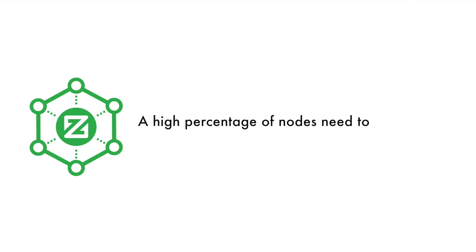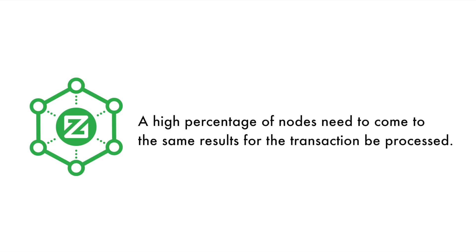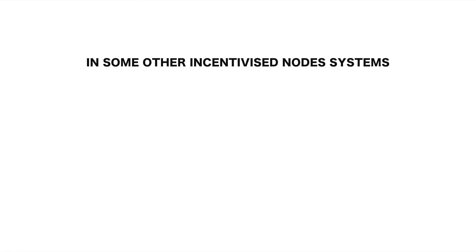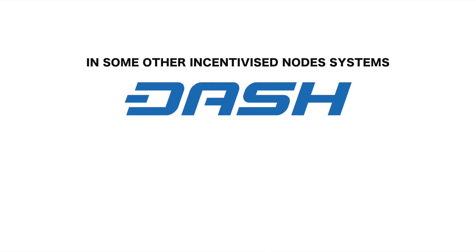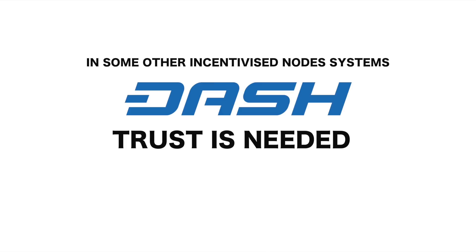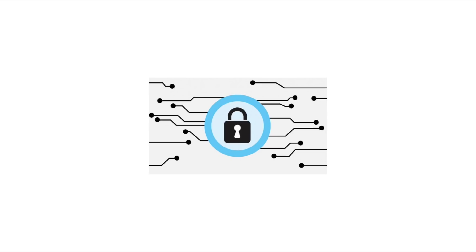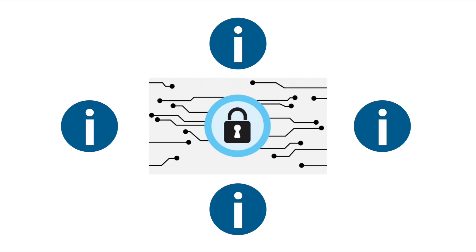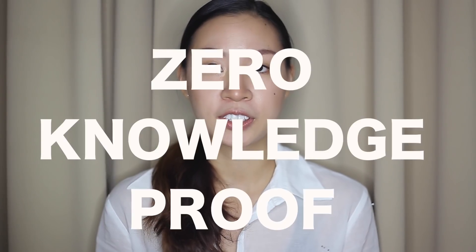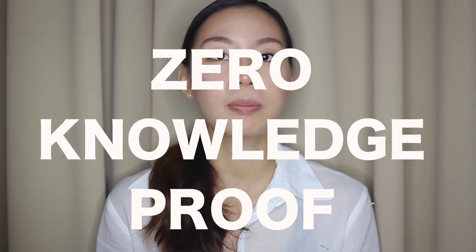This allows other regular nodes to have lower requirements and to just be lightweight. Also with Znodes, a high percentage of nodes have to come to the same results to allow transactions to be processed. It uses something called peer reputation management — I trust you, you trust me, we're a trusting family. In some other incentivized node systems, like in Dash, there's a certain amount of trust needed to ensure the nodes are maintaining your privacy, because in the process of mixing of transactions, they will have access to some of the information. With Znodes, this isn't an issue.